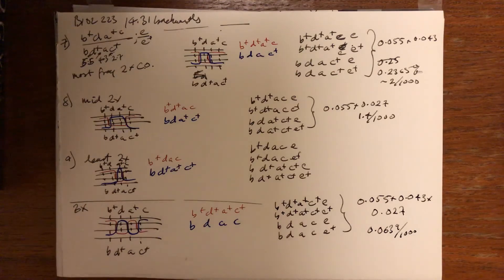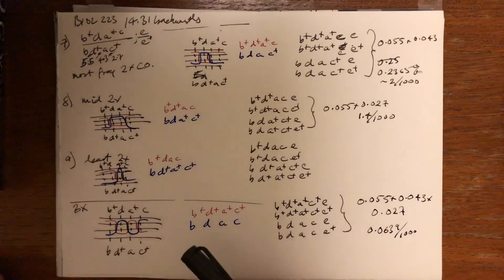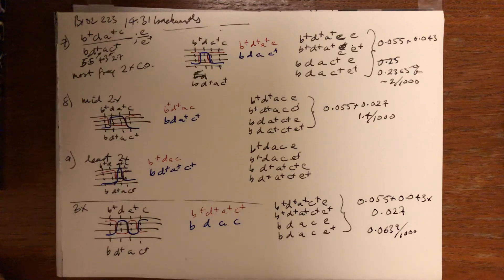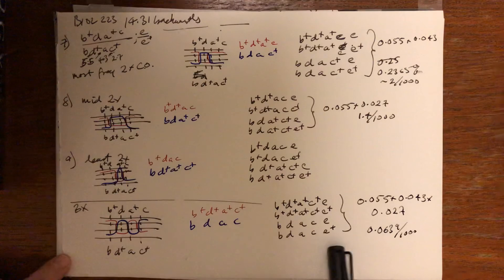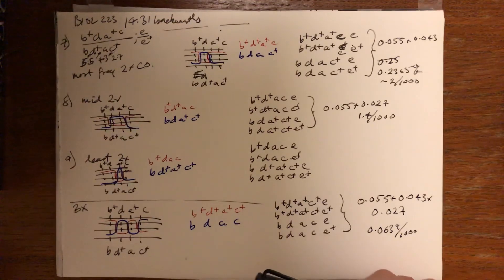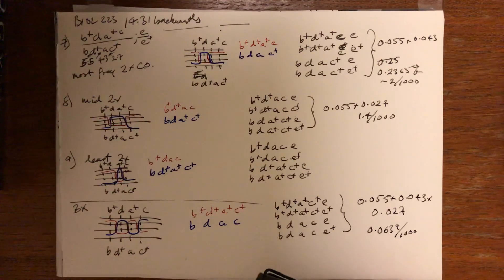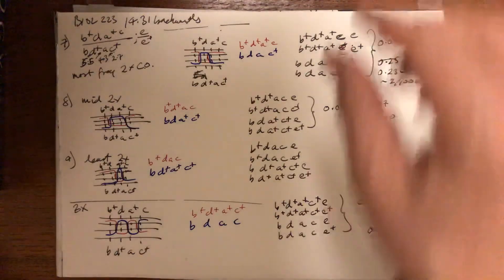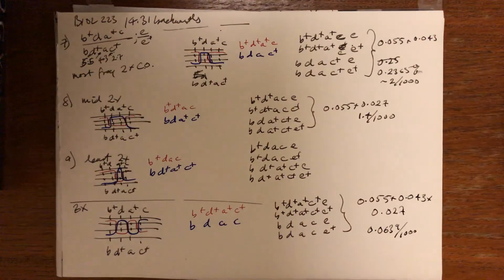Now we've accounted for all possible progeny genotypes — the phenotypes we observe represent the genotypes of gametes made by the female undergoing meiosis. We've accounted for all 32 of them, and we've seen that the 16 most frequent are the ones that show up in the problem. The other ones don't show up; if this were real data, we would have seen some of those double crossing overs, but they're neglected for the point of the problem.